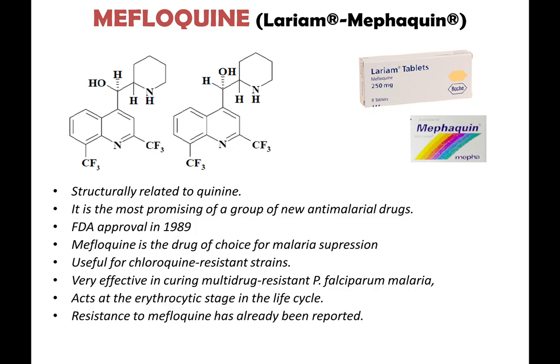Based on the quinoline alkaloids, mefloquine is a very good discovery — a very potent drug related to quinine but more effective, particularly because of the trifluoromethyl groups. FDA approved it in the late 1990s and it is a drug of choice for malaria, particularly against chloroquine-resistant strains. It is very effective in curing multi-drug-resistant falciparum malaria, acting at the erythrocytic stage. However, Plasmodium has also started developing resistance to this drug to a certain extent.